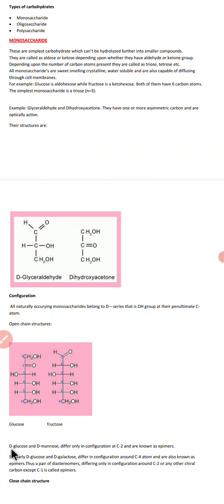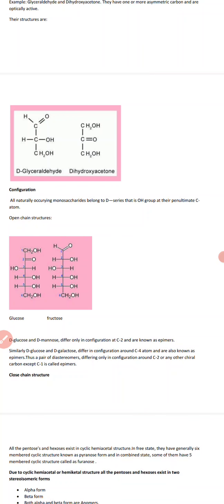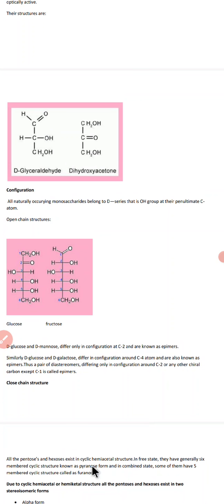D-glucose and D-mannose differ only in the configuration around carbon two and are known as epimers. Similarly, D-glucose and D-galactose differ in configuration around carbon four and are also epimers. Epimers are isomers which differ in the configuration of only one carbon while the rest remain the same.